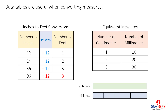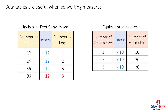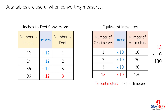What process occurs in this table? If the number of centimeters is multiplied by 10, the result is the number of equivalent millimeters. How many centimeters are equal to 130 millimeters? What number multiplied times 10 will equal 130? 13 times 10 equals 130. 13 centimeters are equivalent to 130 millimeters.